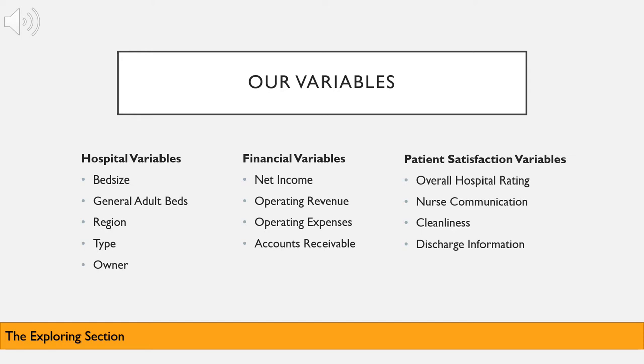So these are our variables. Since our initial questions are related to finance and quality, we picked hospital, financial, and patient satisfaction variables in order to explore these variables to create a hypothesis to test in our testing section. We added an additional variable, owner, because we thought it would be more helpful in developing our hypotheses. For our financial variables, we adjusted these numbers based on bed size of the hospital. This makes the data more comparable.